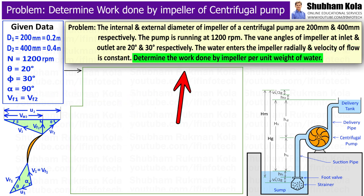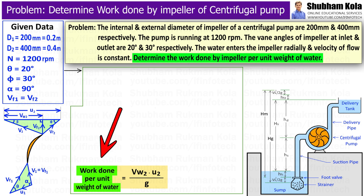In this problem, we want to calculate work done by impeller per unit weight of water, which can be determined by this formula, where we need to calculate values of Vw2 and U2.